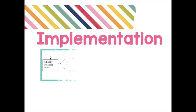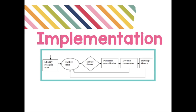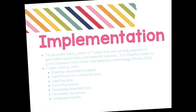For implementation, this chart shows the steps one would take to implement grounded theory. It starts at identifying a research area, collecting data, extracting themes, postulating generalizations, developing taxonomies, and developing theory. This figure was created by Ominah in 2010 to show the different steps of implementation.